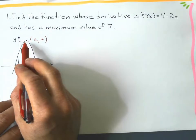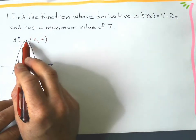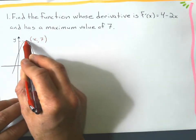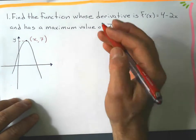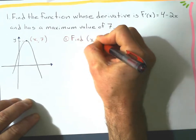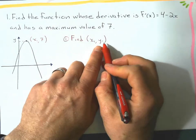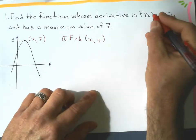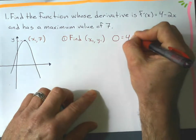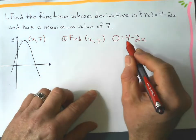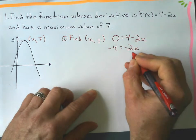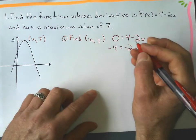How do I find that x-value? I know that the gradient at a maximum is equal to 0. Here's the gradient function. So the first thing I'm going to do is set the gradient equal to 0 and solve for x. So 0 equals 4 minus 2x. Subtract 4 to the other side: negative 4 equals negative 2x. Divide by negative 2, and I get x equals 2.